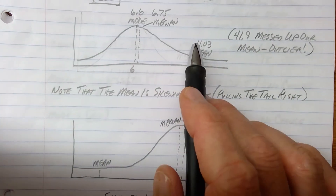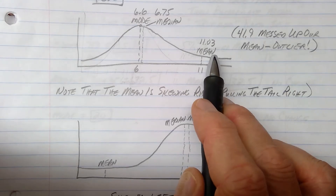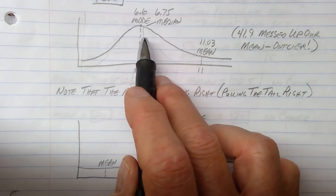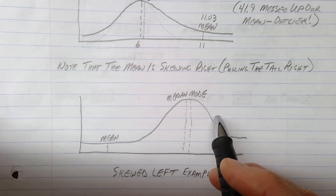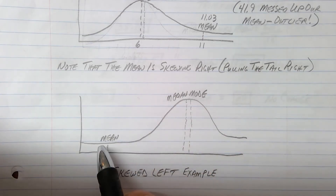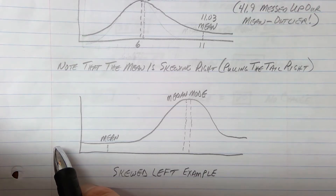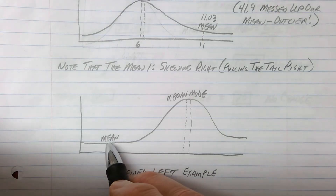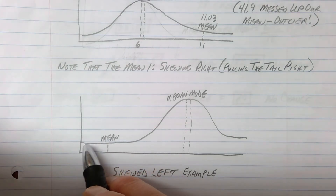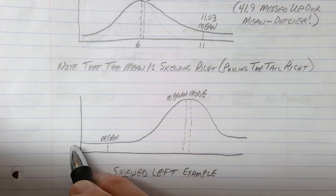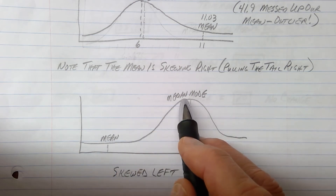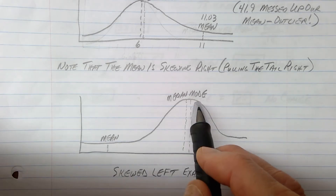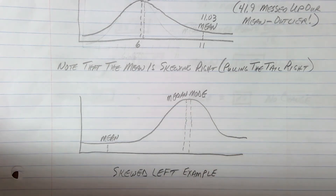The really heavy rabbit is skewing our graph to the right — pulling the mean to the right and the median a little bit to the right. If instead we had a really light rabbit, like a one pound rabbit, it would pull the curve the other way. The median and mode would still be about six pounds, but the mean would be a lot lower — that one pound rabbit pulls the curve to the left, pulling the mean way left and the median just a little left. The mode stays under the peak. This is a skewed left example, where an outlier is pulling your data to the left.